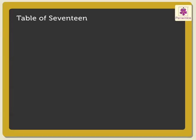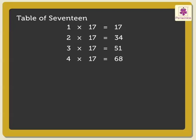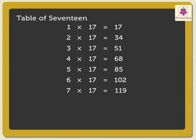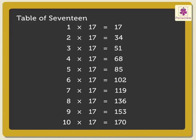Next is the table of 17: 1×17 is 17, 2×17s are 34, 3×17s are 51, 4×17s are 68, 5×17s are 85, 6×17s are 102, 7×17s are 119, 8×17s are 136, 9×17s are 153, 10×17s are 170.